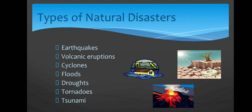A natural disaster is a major adverse event resulting from natural processes of the earth. Examples are floods, hurricanes, tornadoes, volcanic eruption, earthquake, tsunamis, storms and other geographical processes. A natural disaster can cause loss of life or damage to properties, and typically leaves some economic damage in its wake, the severity of which depends on the affected population's ability to recover and also on the infrastructure availability.